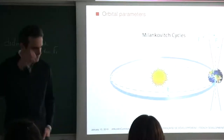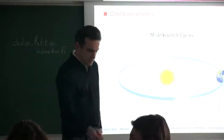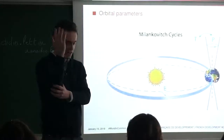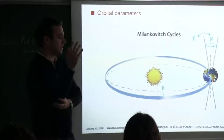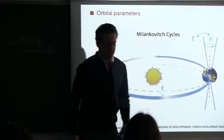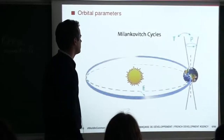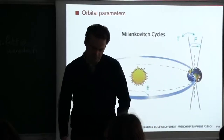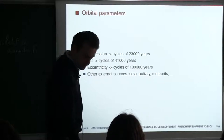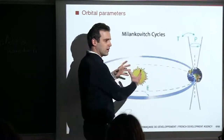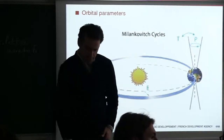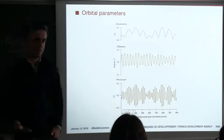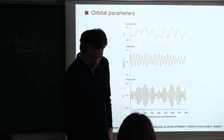Then the famous Milankovitch cycles — the orbital parameters. You have three of them: the tilt, which is this angle that changes; then the precession, the dynamics of the rotation axis; and then the eccentricity, which changes from a full ellipse to a quasi-circle. The periodicity of these three parameters also changes the dynamics of the climate, but at the 10,000-year period.